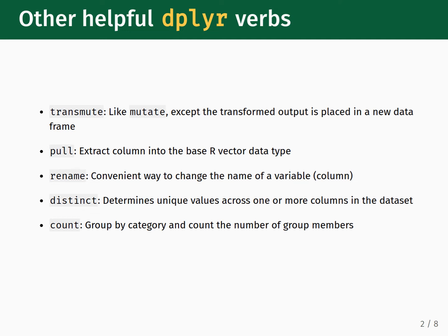This is sometimes required if you are working with R packages outside of the tidyverse. Next up is the rename function, which provides a convenient way for us to change the name of the columns within a dataset. After that we have the distinct function, which reports all the unique values found within a column or a group of columns. Last is the count function, which allows us to group over categories and count the number of rows within each group.